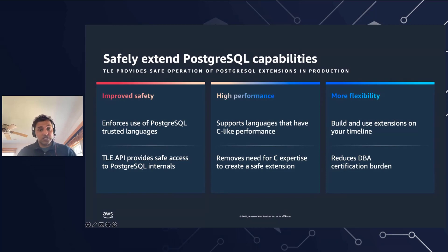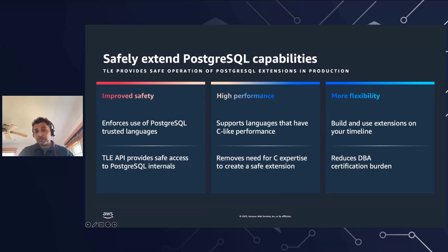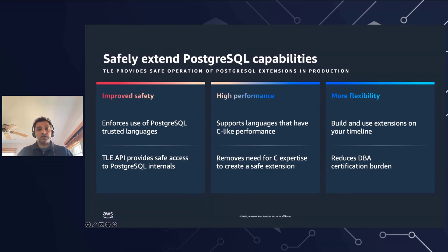TLE, as the name suggests, is a trusted language extension. It allows you to write extensions in trusted languages — the languages we support today are JavaScript, Perl, and PL/pgSQL. The attributes of trusted languages are that they restrict direct access to the file system and prevent unwanted privilege escalation. This extension enforces Postgres to use trusted languages and provides safe access to Postgres internals. Because we write using JavaScript, Perl, or PL/pgSQL, it supports C-like performance without needing to be an expert in C programming. It also gives you flexibility to build and use extensions on your own time, reducing DBA certification burden.